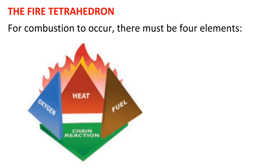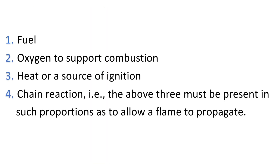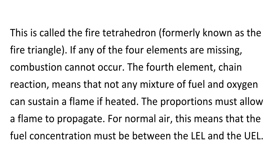The fire tetrahedron: for combustion to occur, there must be four elements — 1) fuel, 2) oxygen to support combustion, 3) heat or a source of ignition, 4) chain reaction, i.e., the above three must be present in such proportions as to allow a flame to propagate. This is called the fire tetrahedron, formerly known as the fire triangle. If any of the four elements are missing, combustion cannot occur. The fourth element, chain reaction, means that not any mixture of fuel and oxygen can sustain a flame if heated — the proportions must allow a flame to propagate.